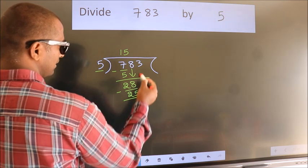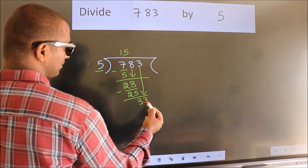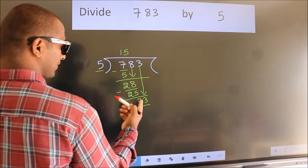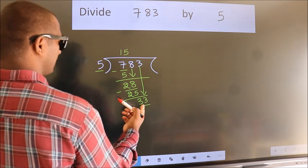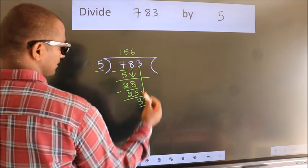After this, bring down the beside number. So 3 down. So 33. A number close to 33 in the 5 table is 5, 6, 30.